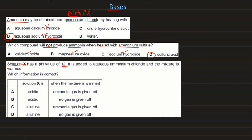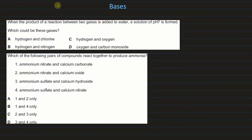Solution X has a pH of 12, meaning it is a strong base. It is added to aqueous ammonium chloride and the mixture is warmed. Since X is alkaline and base reacts with ammonium chloride to form ammonia gas, C is the correct answer.